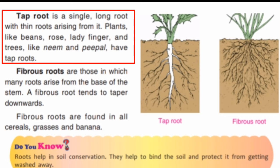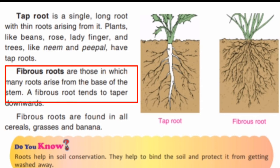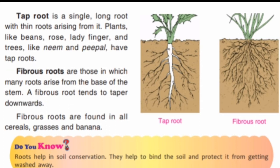A tap root is a straight and long single root with small roots branching off it. The second type is fibrous roots. Fibrous roots are roots in which many roots arise from the base of the stem, as opposed to tap root which has one single root.